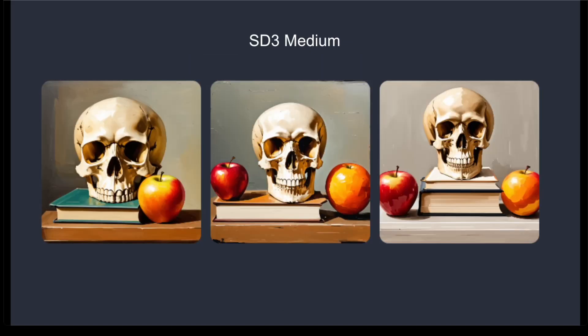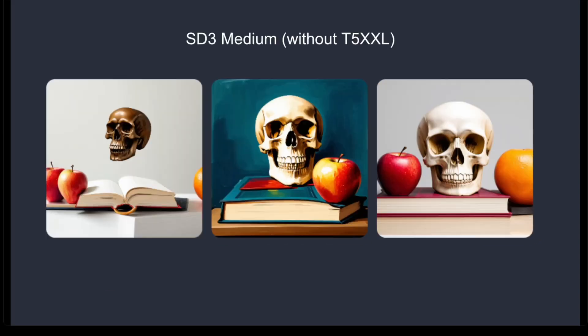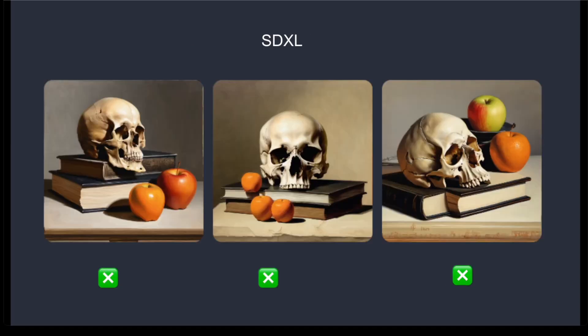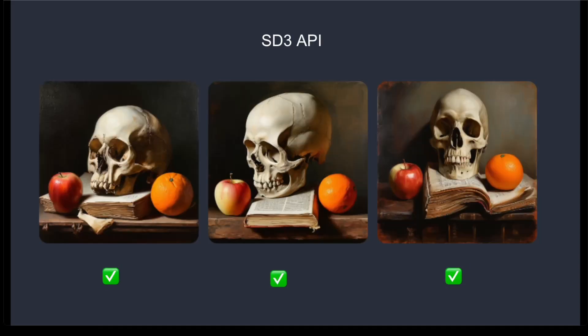The last task tests how well the images follow the prompt. I tried to generate a still life painting with a skull on a book, an orange on the right, and an apple on the left — a challenging problem for Stable Diffusion models. The SD3 Medium model did pretty well, getting 2 out of 3 correct. Removing the T5XXL encoder dropped it to 1 out of 3. For comparison, SDXL got none correct, while the SD3 API got all of them correct. The ability to follow prompts is a big improvement in SD3 Medium — much better than SDXL, but not quite as good as the SD3 large model.